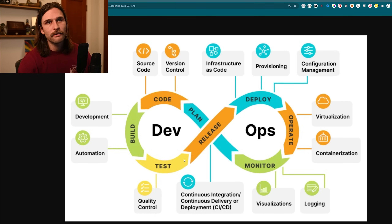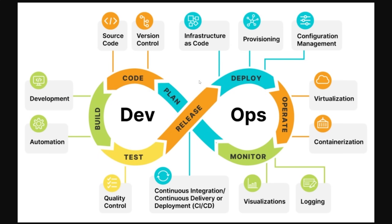This infinity loop of plan, code, build, test, release, deploy, operate, monitor, and feedback — that is DevOps. It keeps the development and operational processes in constant motion, adapting and improving with each cycle. That's DevOps in a nutshell. I'm Forrest — I hope you enjoyed this video enough to subscribe or like and share it with a friend who needs to learn about DevOps. I genuinely hope this helped — that's why I make this content. Until next time, y'all have a good one.